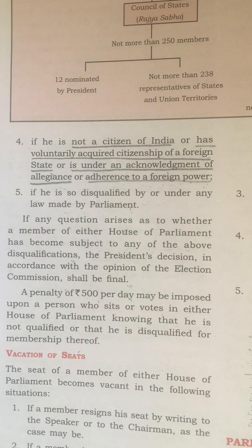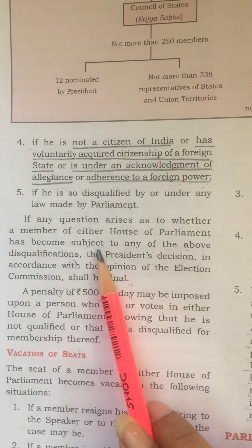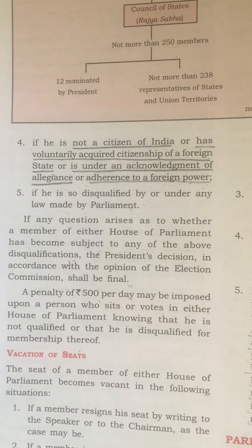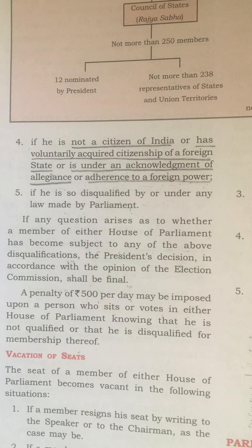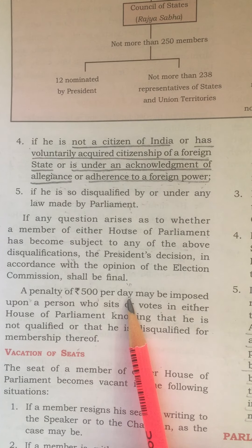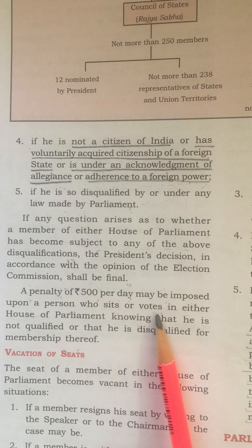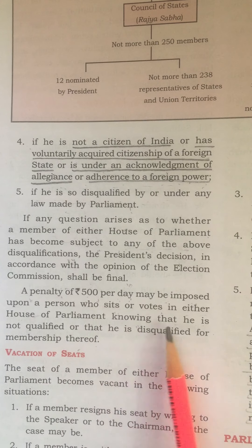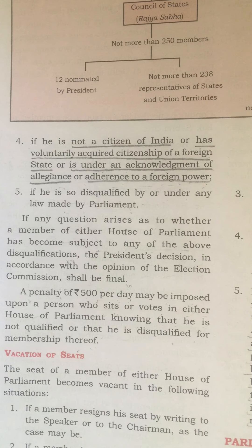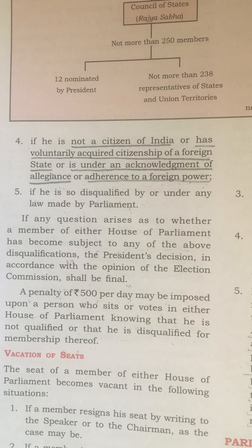So if a member of either house — that is Lok Sabha or Rajya Sabha — has become subject to any of the above disqualifications, the president has the power to take a decision in accordance with the opinion of the election commission as to whether that member should continue in the house or not. Additionally, a penalty of rupees 500 per day may be imposed upon a person who sits or votes in either house of parliament knowing that he is not qualified or is disqualified for membership thereof.